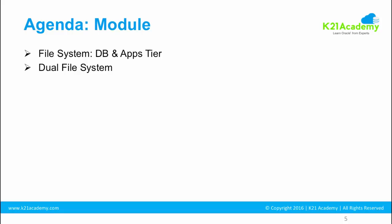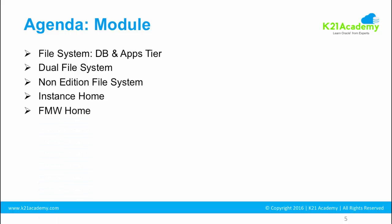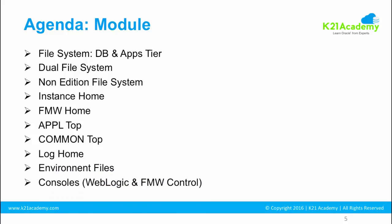Then we'll discuss about dual file system. If you're coming from a previous E-Business Suite background like EBS 11i, 12.0, or 12.1, in this version — 12.2 — you have a dual file system. Then we'll look at non-edition file system, what exactly the other file systems are. Then we'll look at various homes or top-level directories: instance home, Fusion Middleware home, APPL_TOP, COMMON_TOP, and log home.